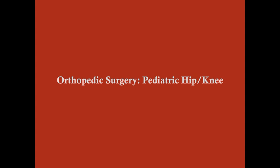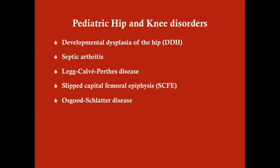We'll talk about some disorders of the pediatric hip and knee, which come up very commonly on the USMLE. These are arranged chronologically: developmental dysplasia of the hip presents in newborns; septic arthritis tends to affect toddlers most; Legg-Calvé-Perthes disease occurs in elementary school-age children; SCFE is usually in middle school-age children; and Osgood-Schlatter disease affects adolescents.